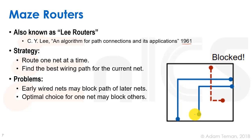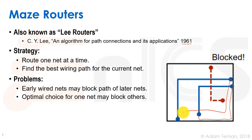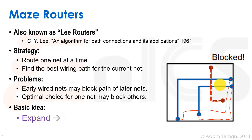An early wired net may block a later net. For example, these two blue nets were routed first, and then the red net cannot find a path to be routed through. If we had chosen a different order of routing, we wouldn't have had these blocks. If we had routed the blue nets differently, we could have routed the red one too. Because we chose to route the blue nets first, we blocked the red one — previous routes will block later ones.